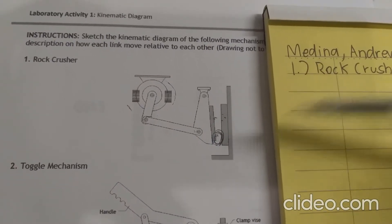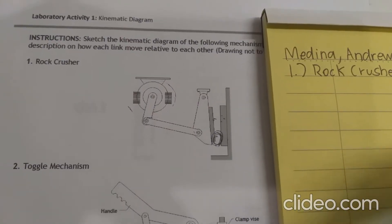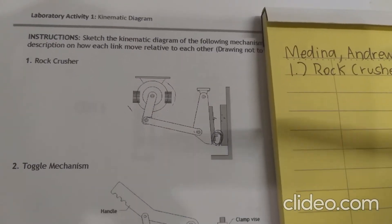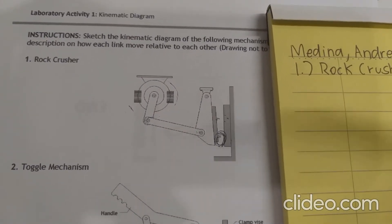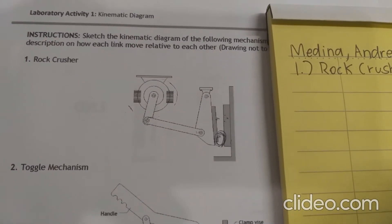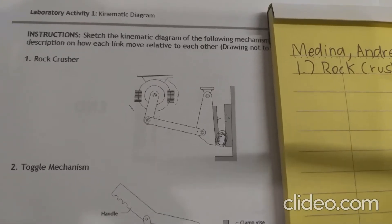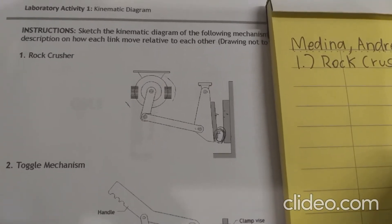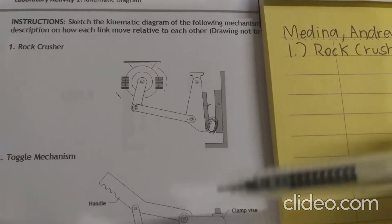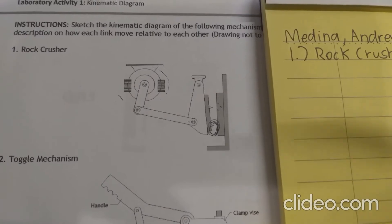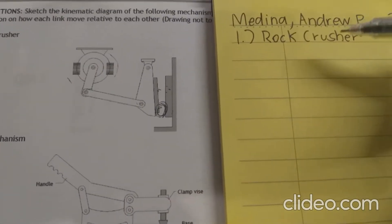In making kinematic diagrams, we usually want to focus on two things: the links and the pairs. We'll make one for each, starting first with the links.